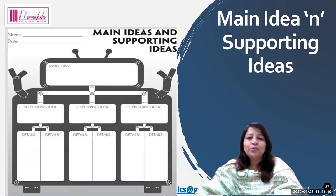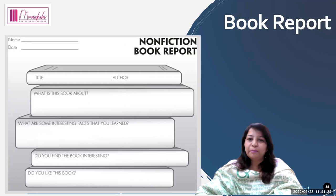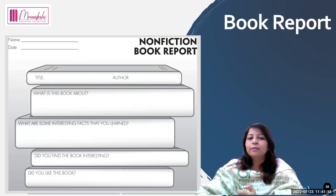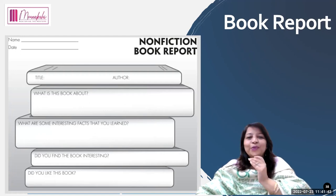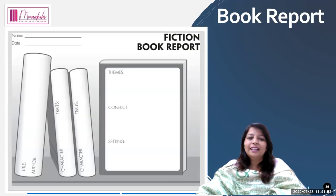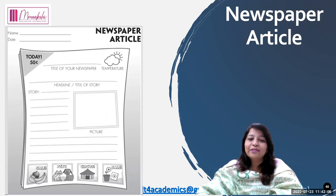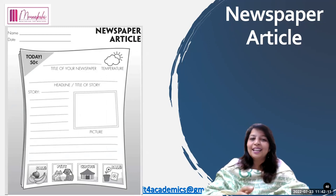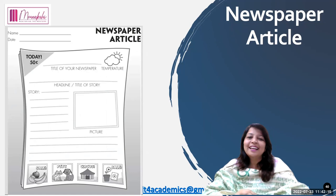Moving ahead: main idea and supporting ideas — mention the main idea, the supporting ideas, and give details. Next is nonfiction book report: they'll write the title, author, what the book is all about, some interesting facts they learned, and whether they found the book interesting. For fiction book reports: theme, conflict, setting, character and traits, title and author. And then newspaper article: they have to write a story, picture, headline, title of the story, and the name of the newspaper. That is another wonderful graphic organizer.